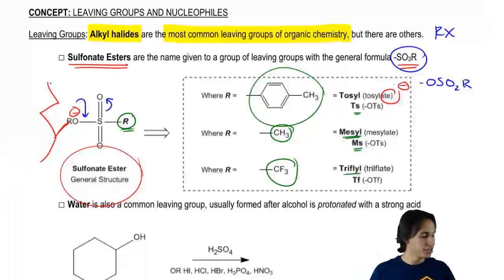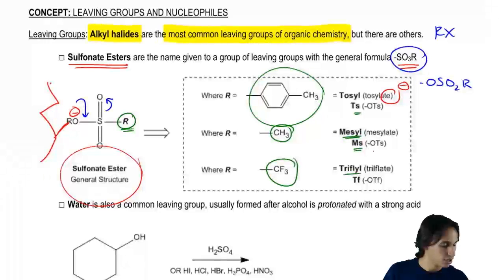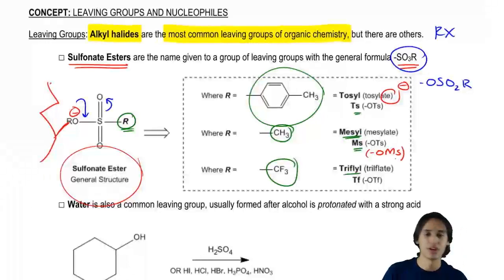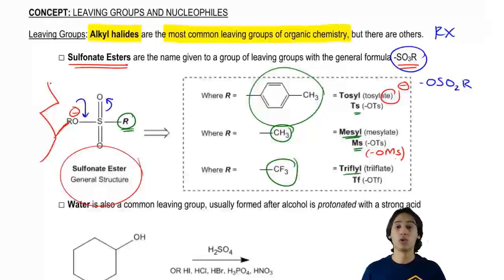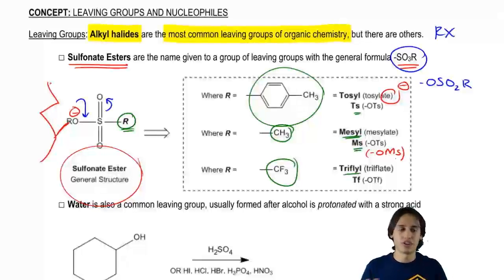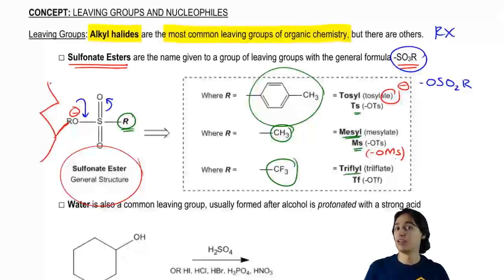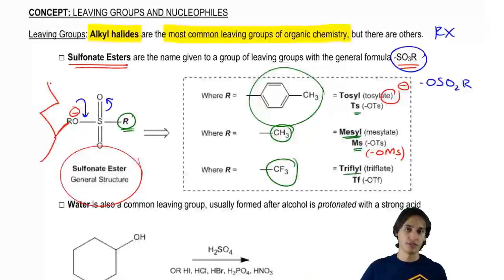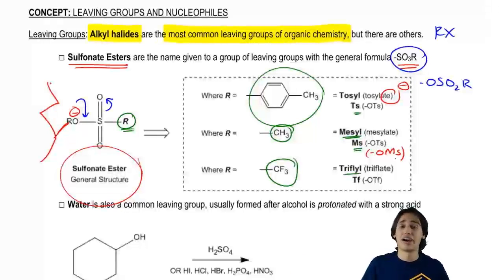I noticed one small error — that should have been OMS, not OTS, so I'm going to correct that. But the overall point is that if you see one of these abbreviations, consider it the same as an alkyl halide. RX is the same thing as OMS or similar. Don't pay too much attention to the distinctions — just treat it the same as you would an alkyl halide. A secondary mesylate is the same thing as a secondary iodo compound, for example.